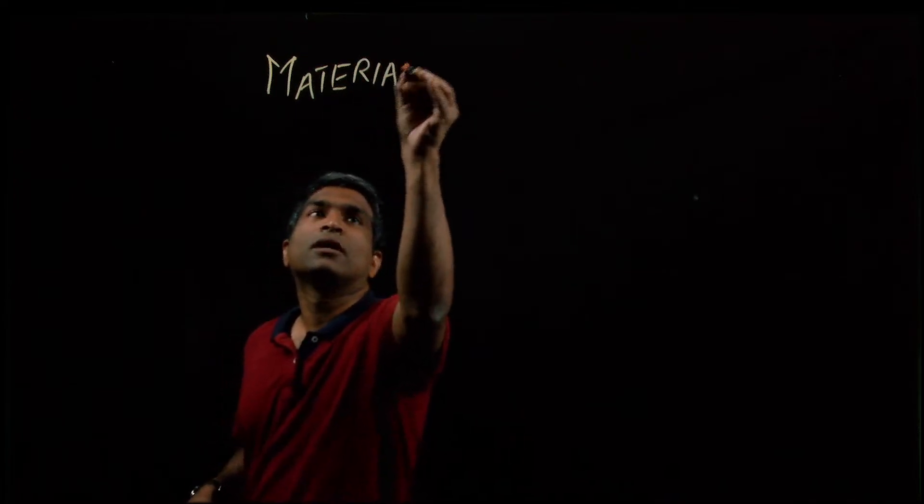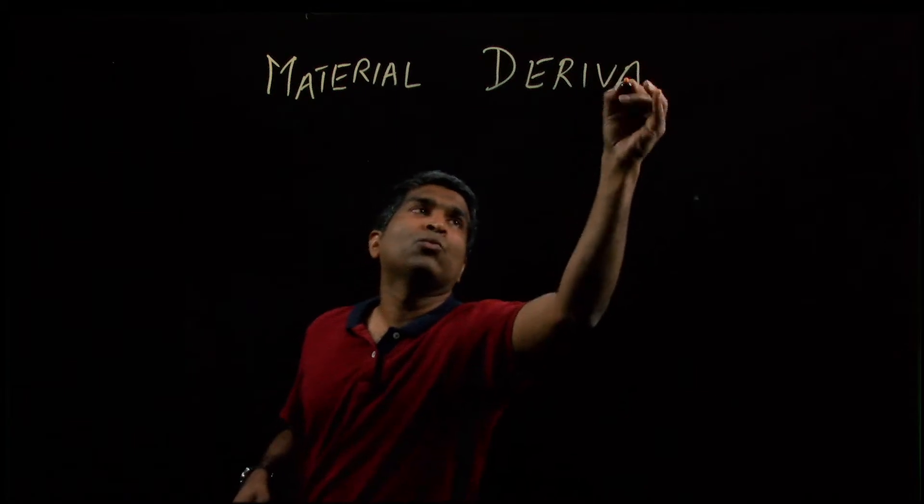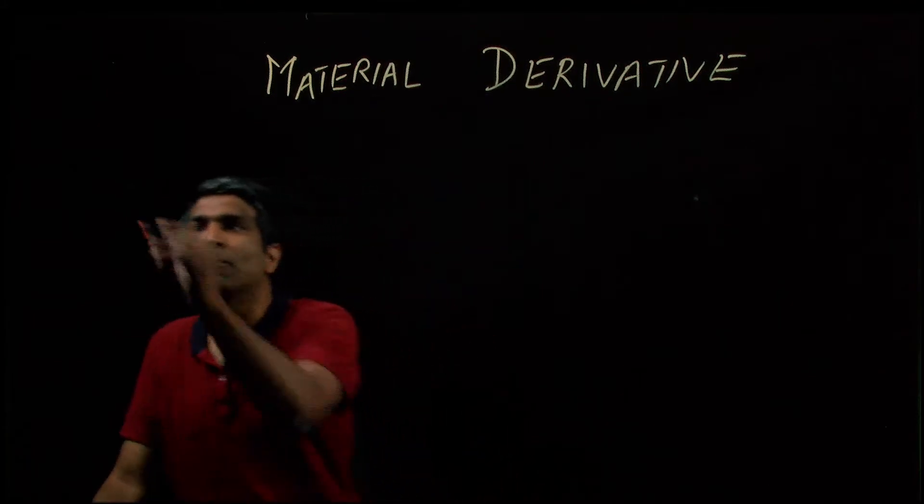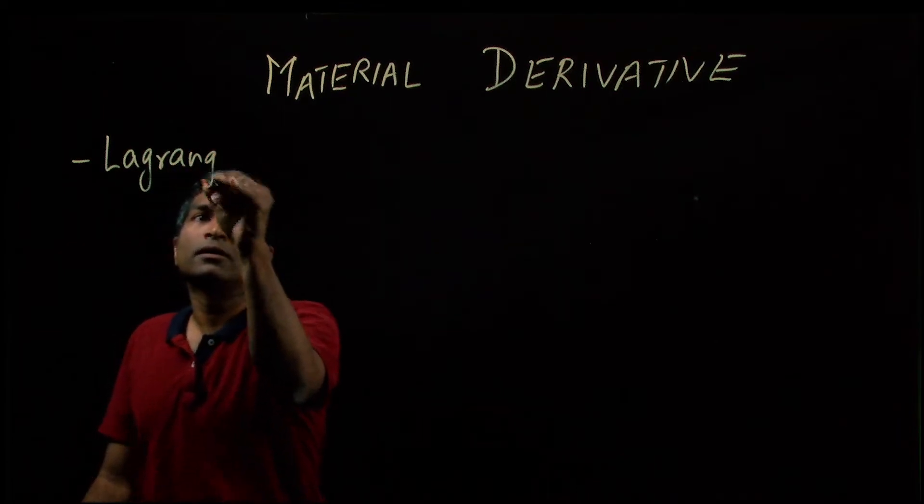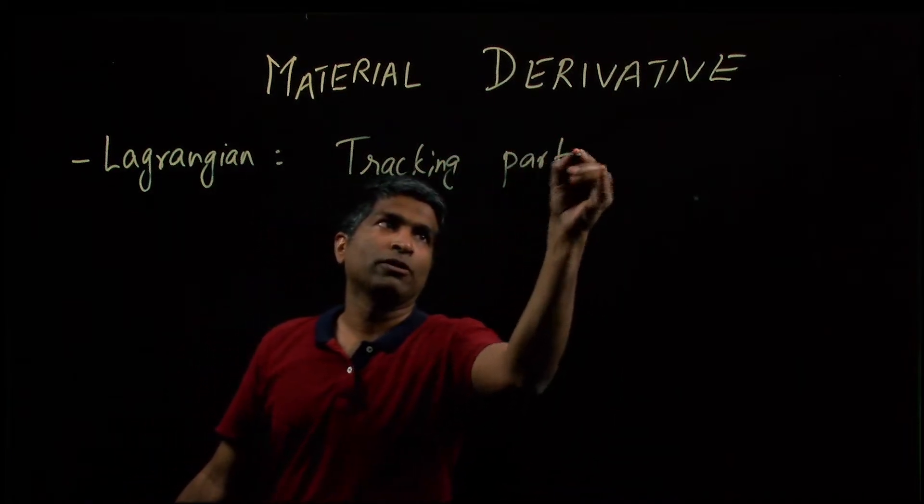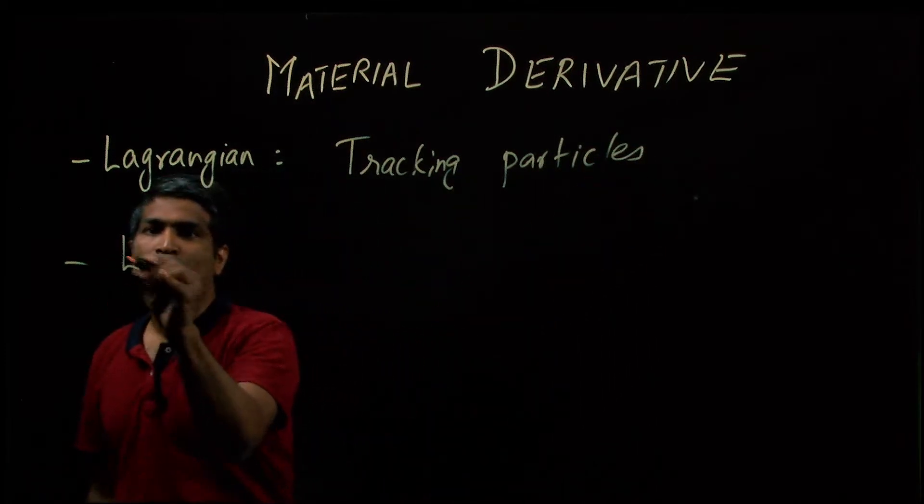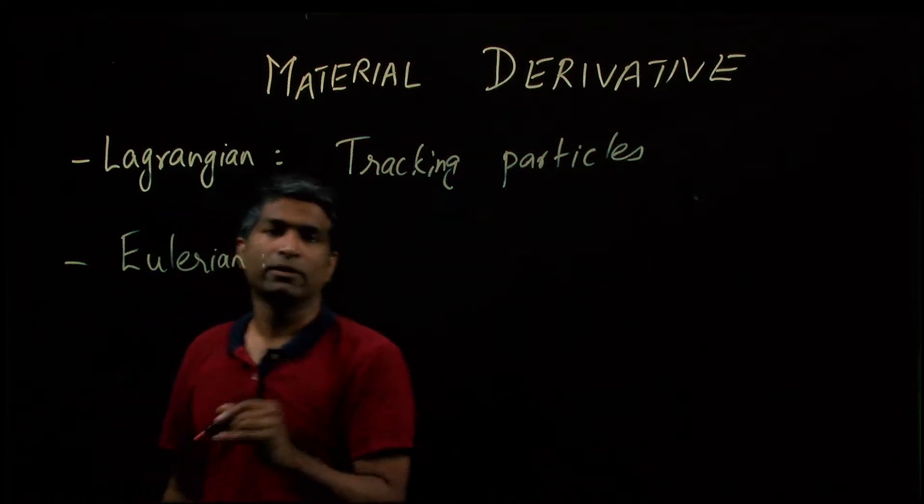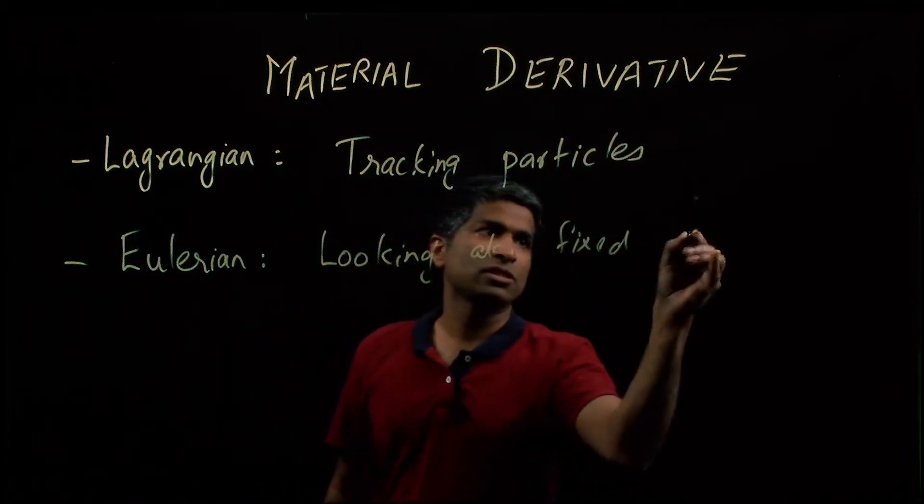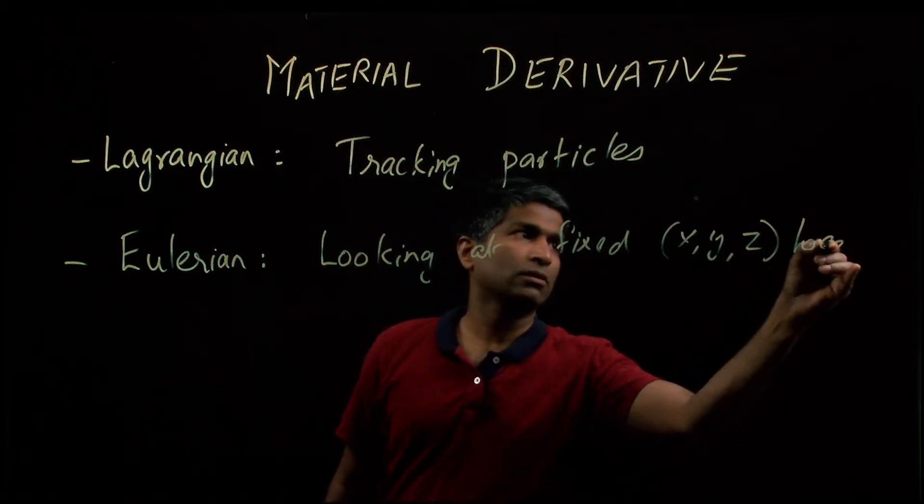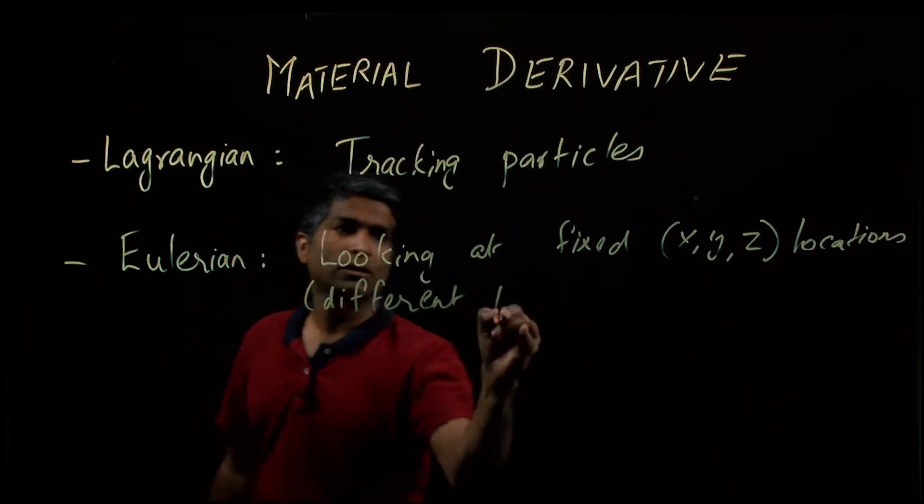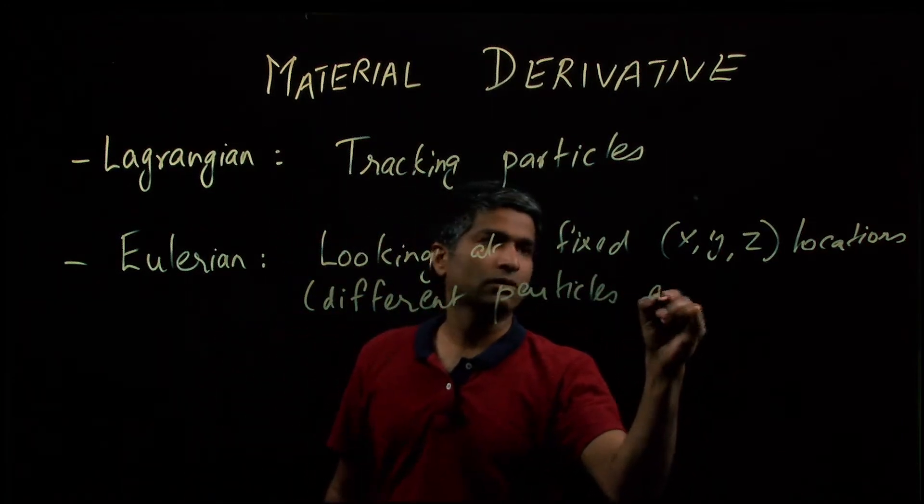What we are trying to do is look at how the time derivative, which we use for acceleration, how the time derivative changes when you are going from a Lagrangian system where you are tracking individual particles and writing f equals ma for each particle, we want to switch from that to an Eulerian system where you are looking at fixed x, y, z locations, different particles occupying that point at different times.